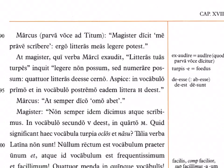'Quattuor literas deesse cerno' — I see that four letters are missing. 'Aspice in vocabulo primo et in vocabulo postremo' — look in the first word and in the last word — 'eadem litera h deest' — the same letter H is missing. 'Deesse' means to be missing or lacking, and 'deest' is the he/she/it form.